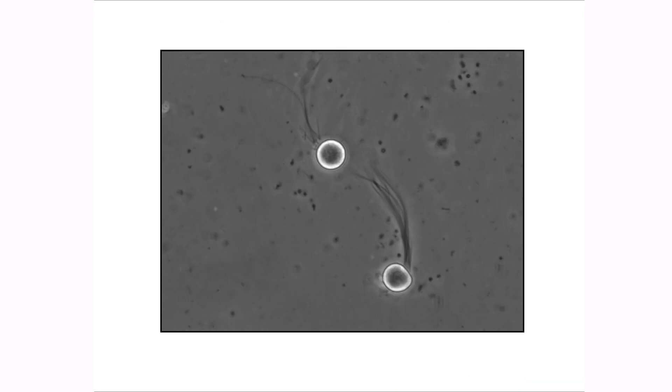Anaerobic fungi were first observed in the four stomachs of ruminants in the early 1900s but were mistakenly identified as flagellated protozoa.